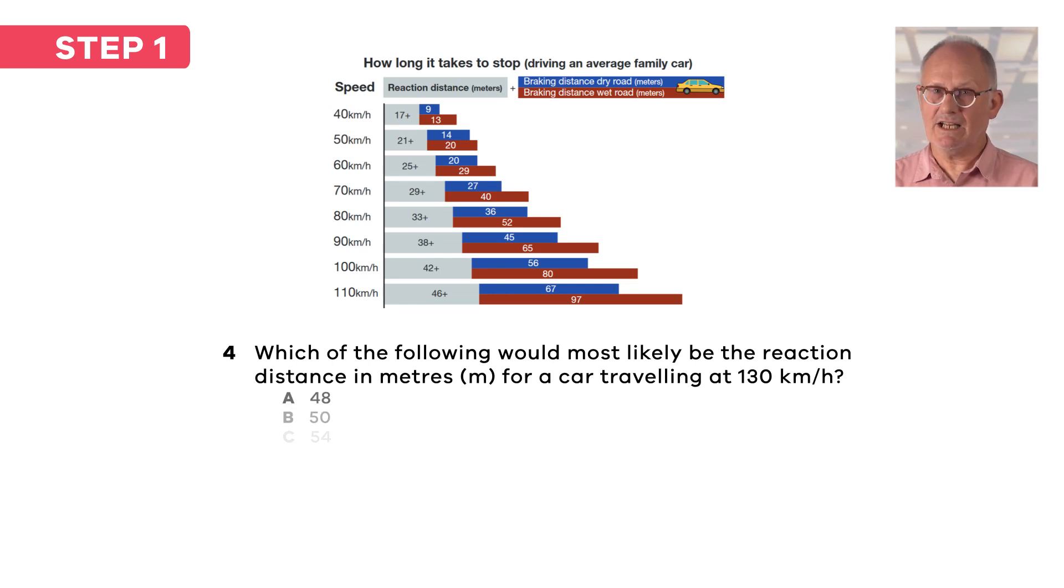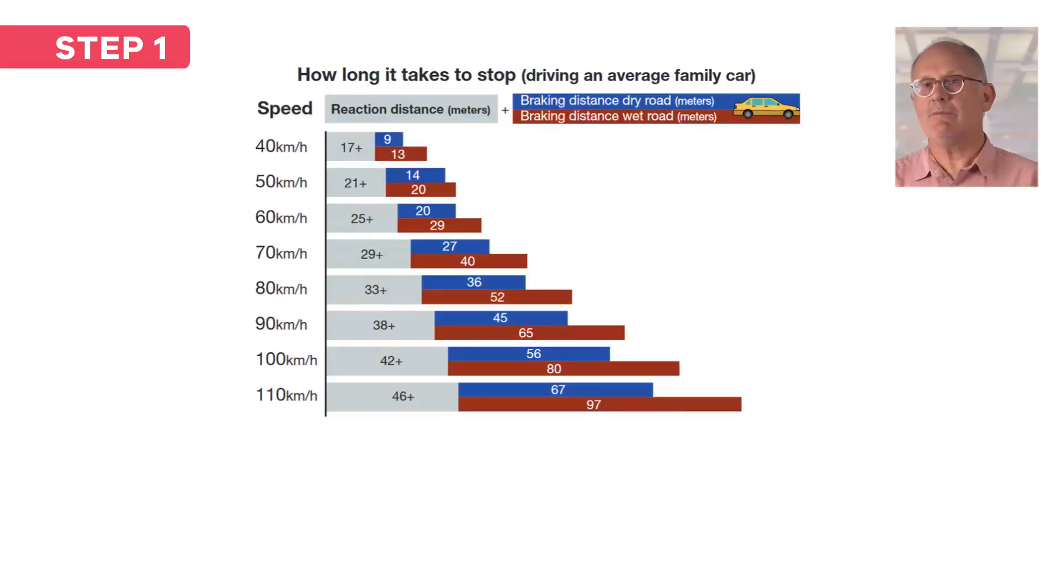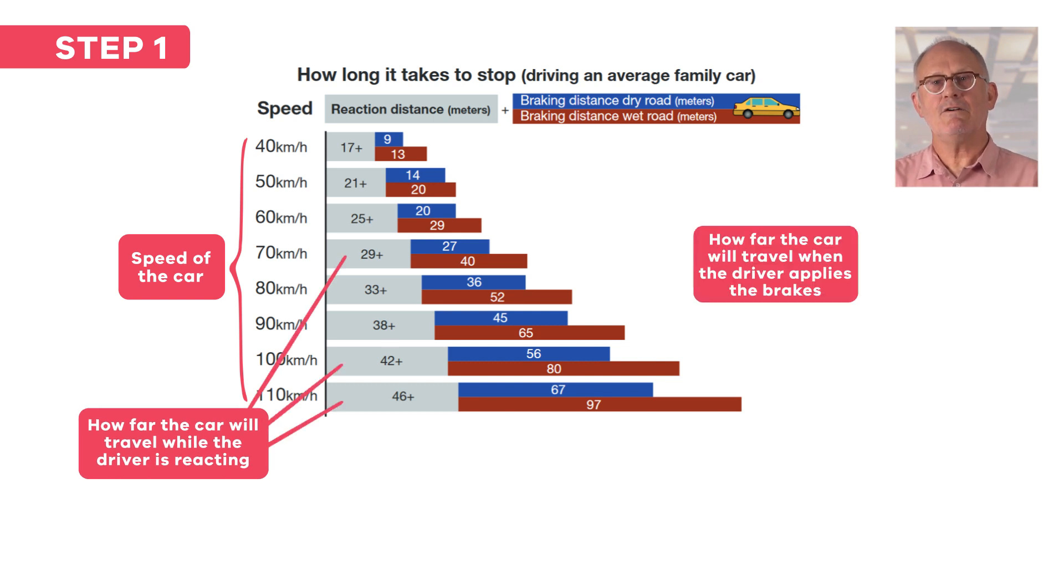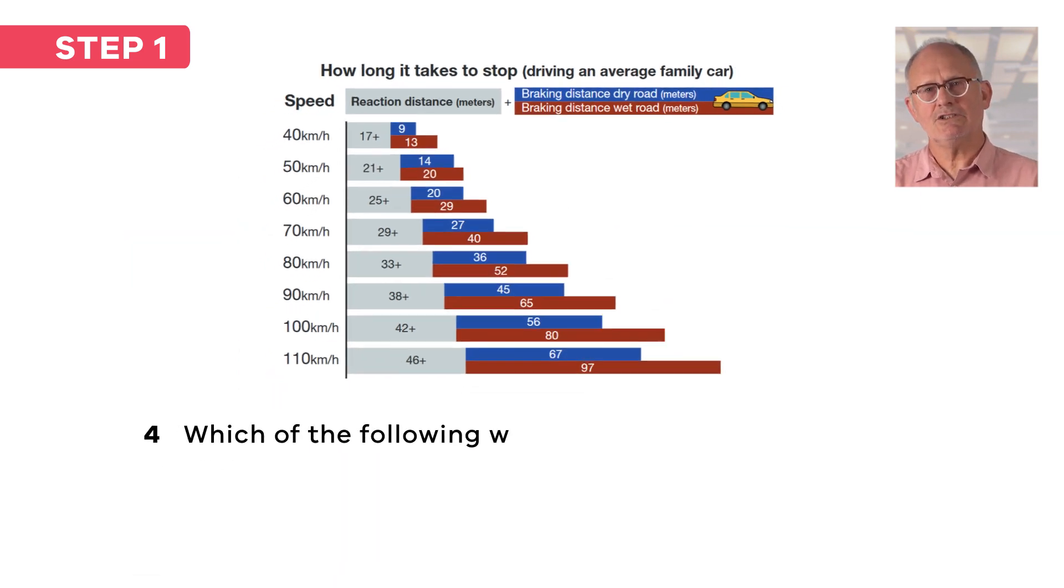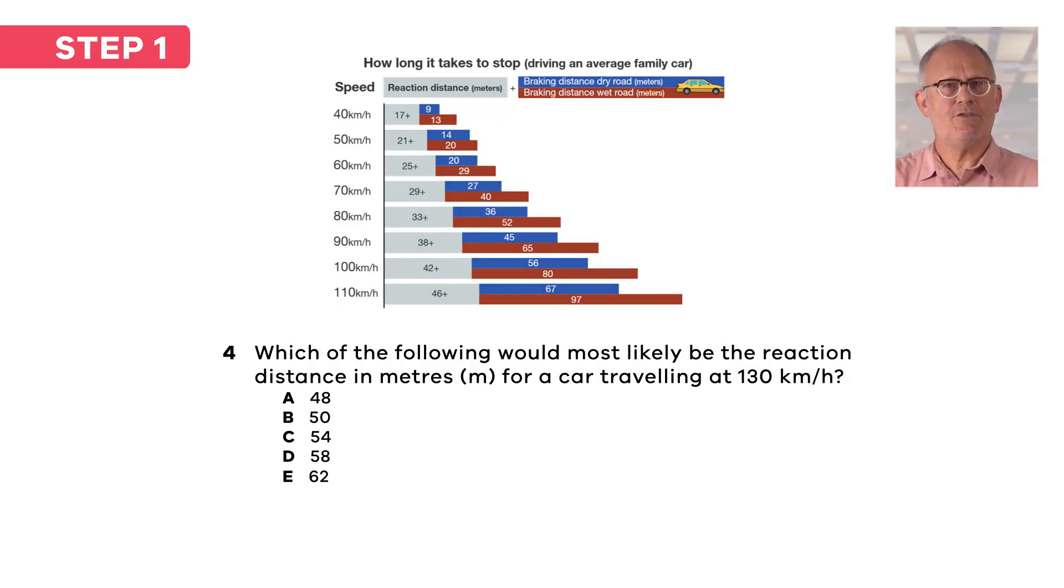Let's have a look at a second problem. This question requires you to read and understand quite a complex chart. So first you need to read the chart and make sure you know what it's about and what all the different bars are telling you. This graph is telling you how many metres a car will travel before it actually stops, taking into account the speed of the car, the driver's reaction time and then how far a car will travel even after the brakes are applied. The question asks you what the reaction distance would be if the car was travelling at 130 kilometres per hour. This information isn't even in the chart so you will need to work out the answer, looking for any patterns in the data.